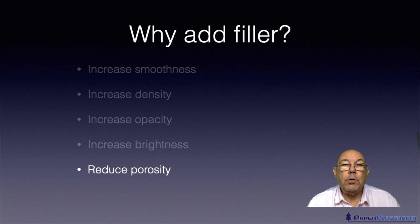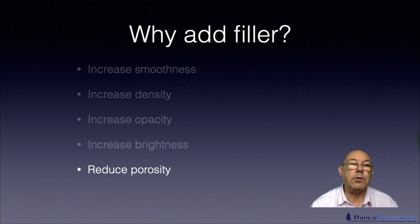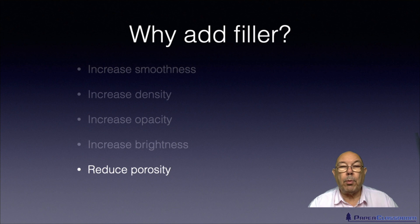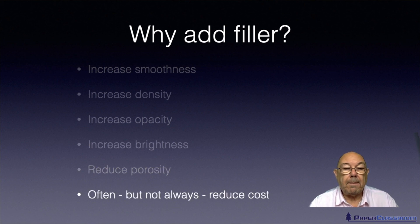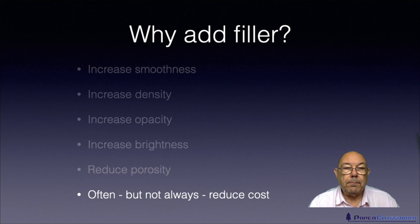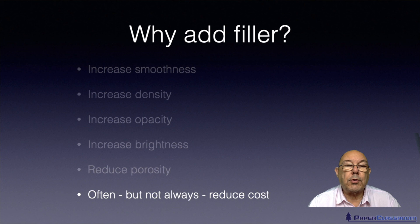We also use fillers to reduce porosity. Sometimes if sheets are moved around in printing operations a vacuum is needed, and if the paper is too porous you can't get a good vacuum, so you can't get a good grip and you can't move it around easily. And often, but not always, fillers are used to reduce cost. Later on I'll show you a table of relative costs of different filler particles.